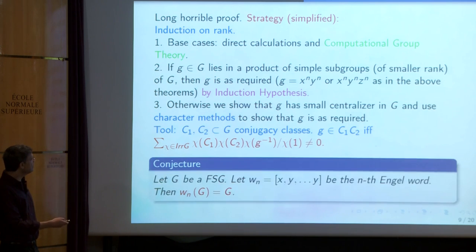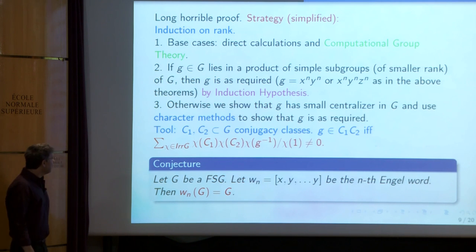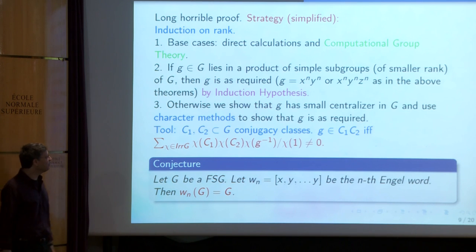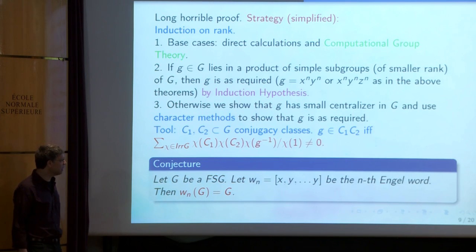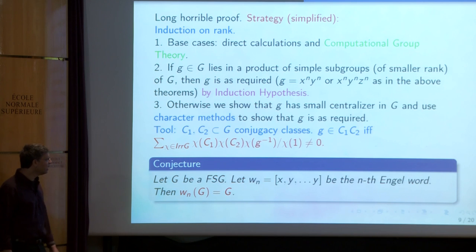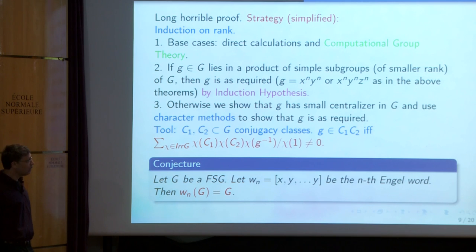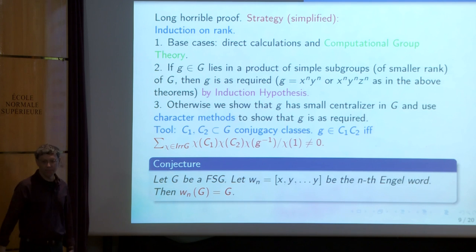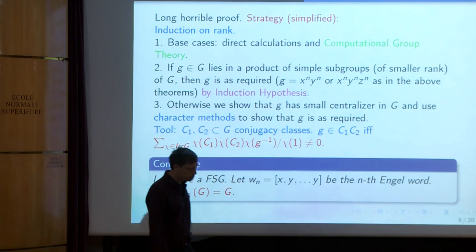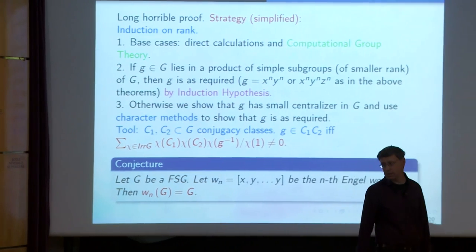Here is the surjectivity conjecture, which is still open. There is a lot of evidence using computers, and some theoretical results, but we are still far from a solution. Take an Engel word — like a repeated commutator — then the conjecture is that every Engel word is surjective on every finite simple group. This would of course generalize the Ore conjecture. For sufficiently large groups, it's also unknown.